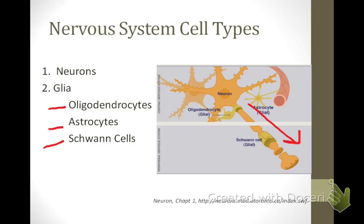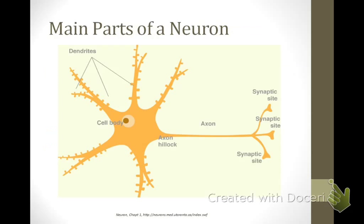Schwann cells provide the myelin in the periphery, while oligodendrocyte cells provide the myelin sheath in the central nervous system. Astrocytes, shown here, help to set up the blood-brain barrier. Glial cells can also regulate synapses and neurotransmitters, respond to injury, and likely perform many other vital functions that neuroscientists are only now starting to uncover.